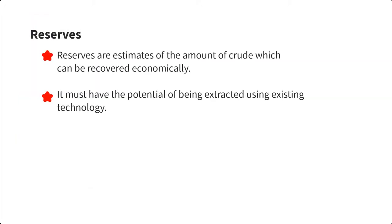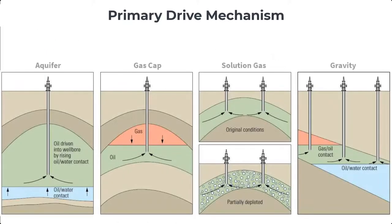A lot of our discussion in this series will be connected to reserves. Before I finally end this introductory video, reserves are recoverable oil and gas volumes which can be extracted using known technology. When a well is drilled into a new reservoir, oil will begin to flow up to the surface because the reservoir has what is called a primary energy, or drive mechanism, that helps to bring hydrocarbons to the surface.